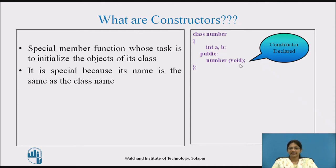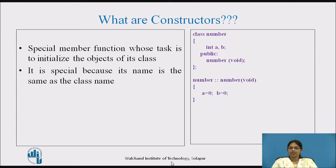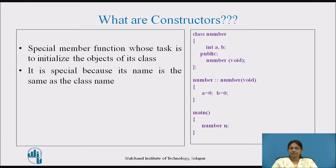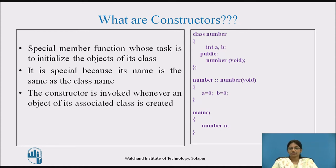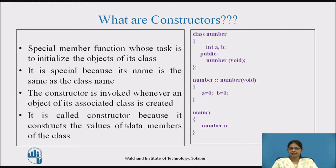The constructor has been declared and defined here. The role of the constructor is to initialize the data members A and B equal to 0. In the main function, we have created the object N for the class number. Constructors are invoked whenever an object of its associated class is created. So here, the constructor 'number' is invoked when object N is created, and the data members A and B are automatically initialized to 0 for object N. It is called a constructor because it constructs the values of data members of the class.